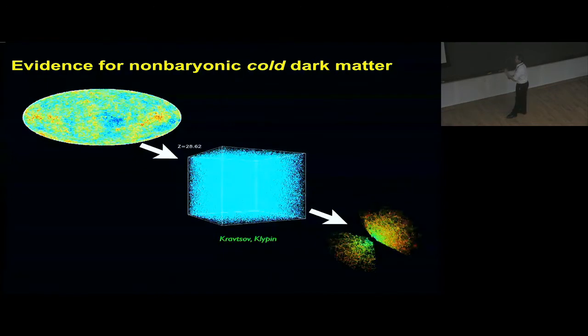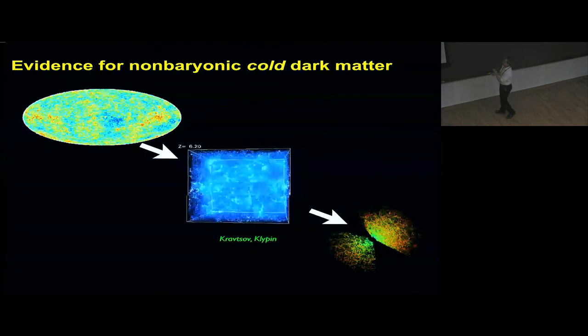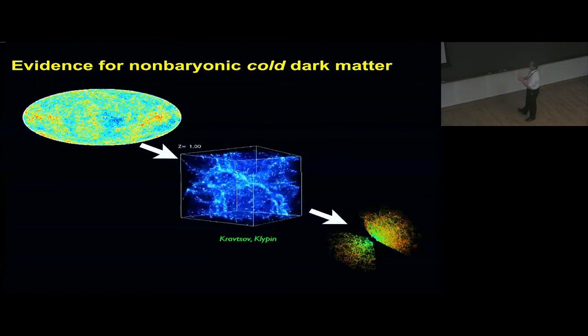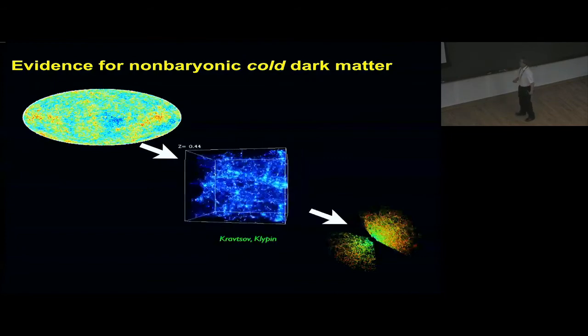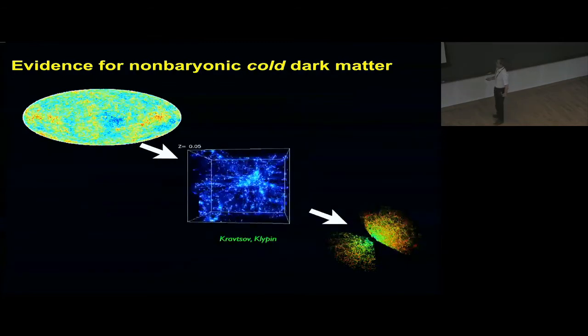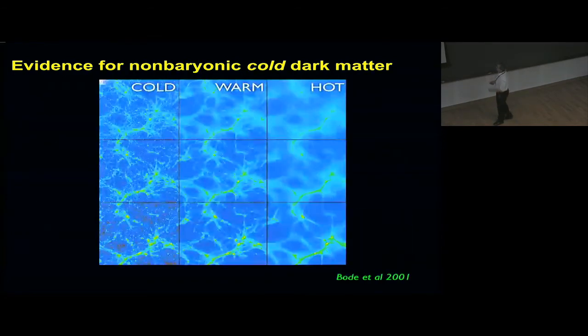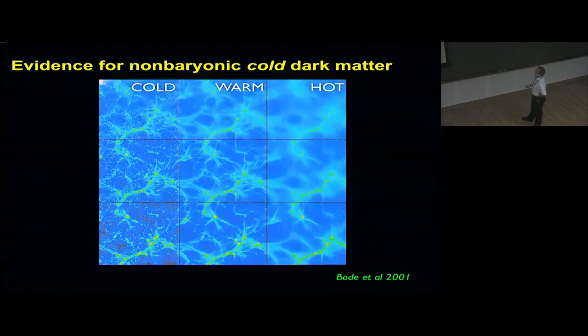To go beyond the CMB we need simulations. We need to go from the CMB to the map of galaxies in the universe through an N-body simulation because gravity is strong. Here comes the distinction between cold and hot dark matter. The structure on the left is produced by cold dark matter and the structure on the right by hot dark matter. Many filaments with hot dark matter and not so much structure on the smallest scales.